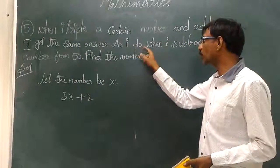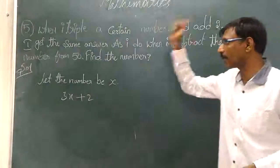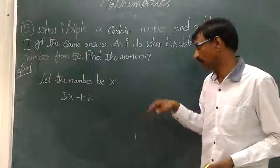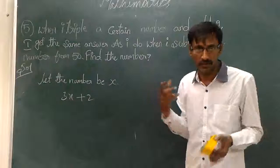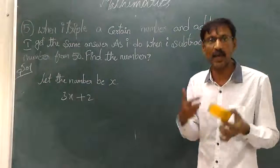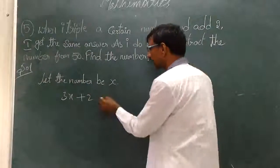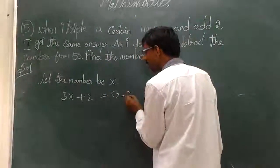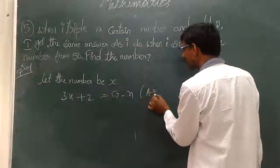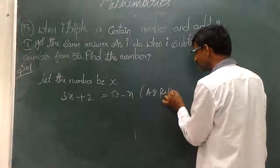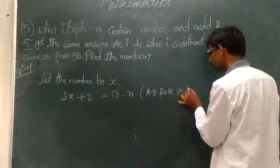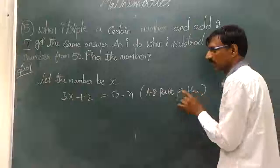As I do when I subtracted the number from 50. When I subtracted x, because I assumed x, x is subtracted from 50. That's the reason it became 50 minus x. This is as per the problem. Is it clear? Very simple.